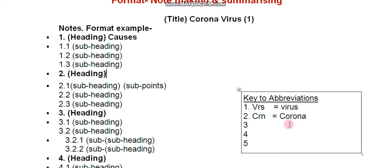The key to abbreviations — for example, 'virus' can be abbreviated, 'corona' becomes 'CRN' — and the headings and subheadings you have used should all be listed together.